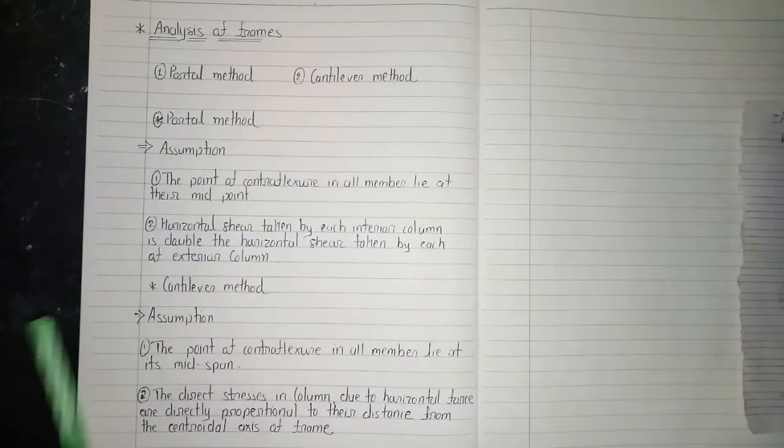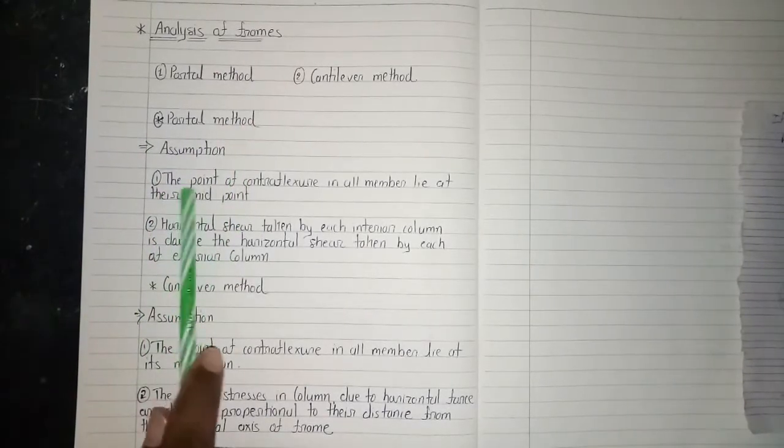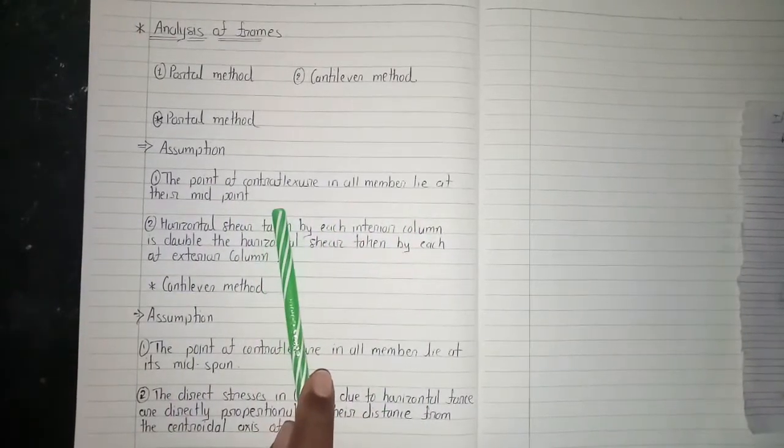For the portal frame method two assumptions are made. First assumption is that the point of counter flexure in all members lies at the mid point.